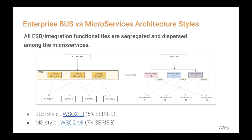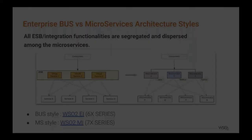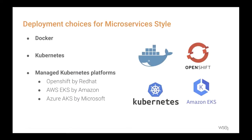However, to overcome the drawbacks and limitations of the bus architecture and to progress as a hybrid integration platform, the WSO2 Micro Integrator was introduced. The seven series of the WSO2 Enterprise Integrator is an all-in-one hybrid integration platform which adheres to the microservices architecture. If you want to implement a microservices architecture-based integration, you can use the WSO2 Enterprise Integrator seven series.